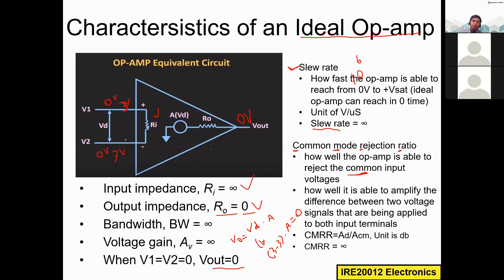If you apply the same voltage to both terminals the output is zero, making the op-amp useless in that configuration. There should always be some difference between the two input voltages. This is the CMRR concept. When using the op-amp as a comparator, we want to know whether v1 is greater than, less than, or equal to v2.